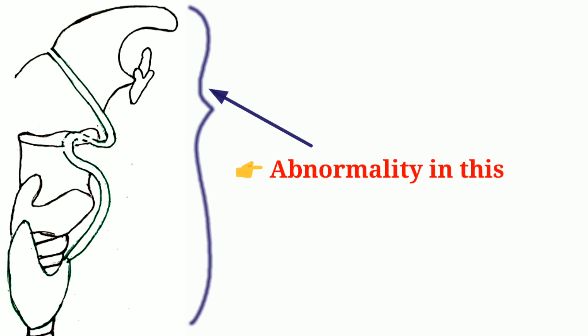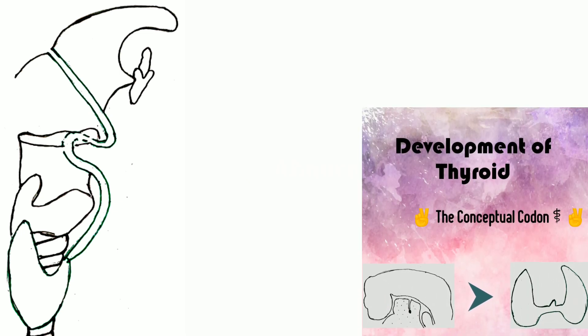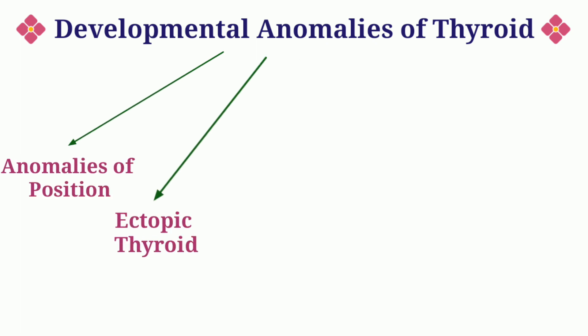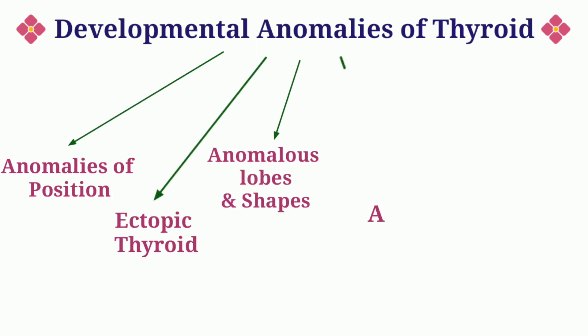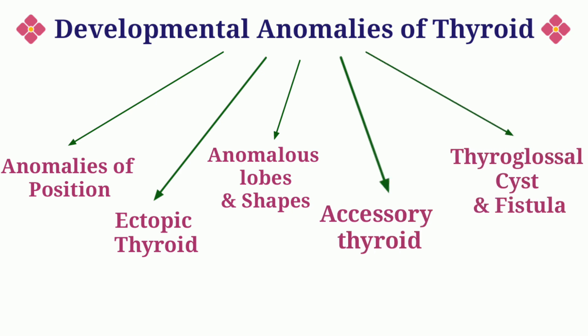Developmental anomalies of thyroid are the abnormalities of thyroid development. You can understand these better if you know the development of thyroid — if you haven't watched that concept, click the i button, watch the video, and come back. The types of anomalies include: anomalies of position, ectopic thyroid, anomalous lobes and shapes, accessory thyroid, and thyroglossal cyst and fistula.